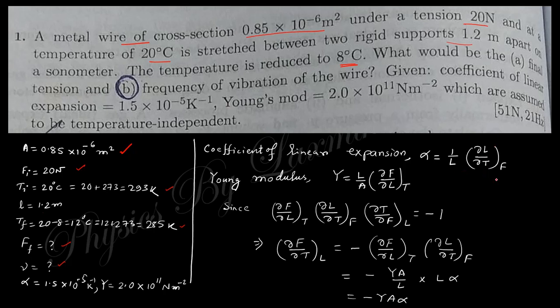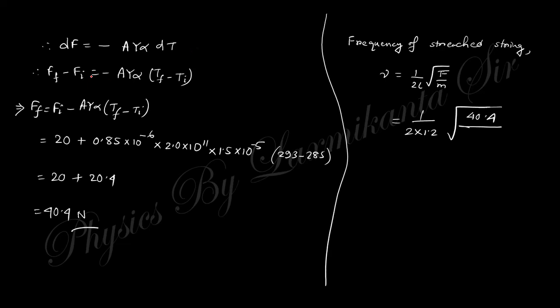The coefficient of linear expansion can be written as alpha = (1/l)(∂l/∂T) at constant force, and Young's modulus is written similarly. From the thermodynamics cyclic relation, the product of partial derivatives equals minus one: (∂F/∂l)(∂l/∂T)(∂T/∂F) = -1. So (∂F/∂T) at constant l equals Y·A·alpha. Integrating gives the final tension.